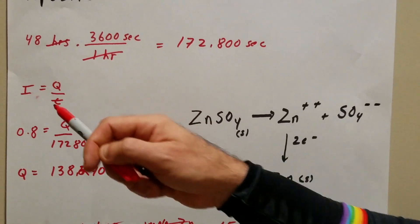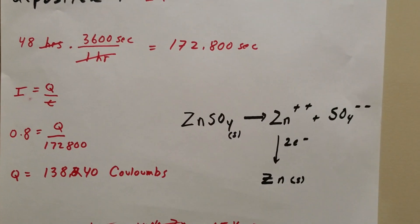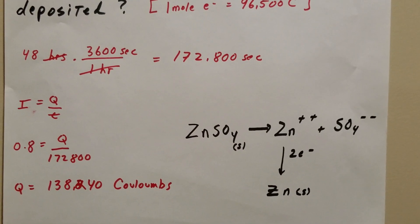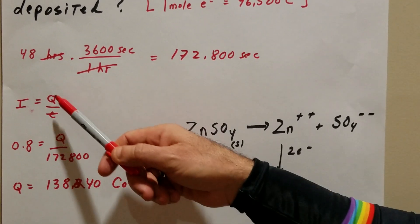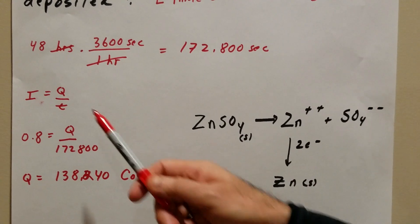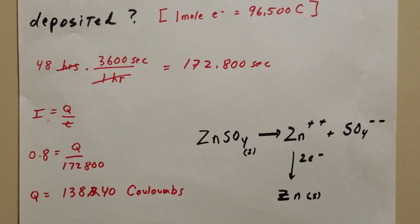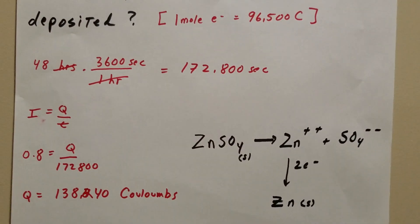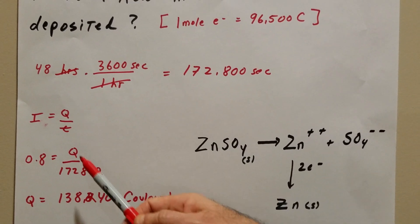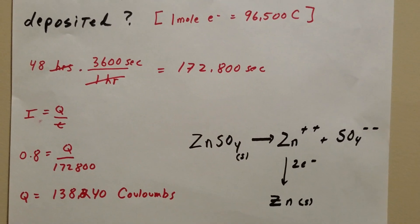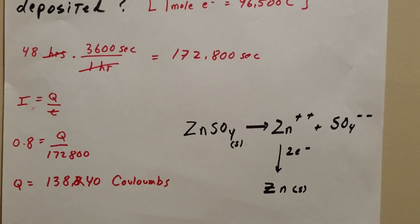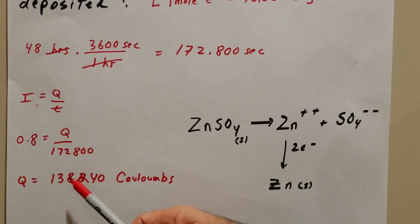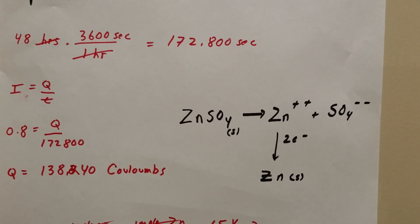you're going to put up the formula. I equals Q over T. I call this the 'I quit' formula. I stands for current in amps, Q is charge in coulombs, and T is time in seconds. So I simply plug in the numbers. We have 0.8 for the current and 172,800 seconds. Multiplying gives me 138,240 coulombs of charge.